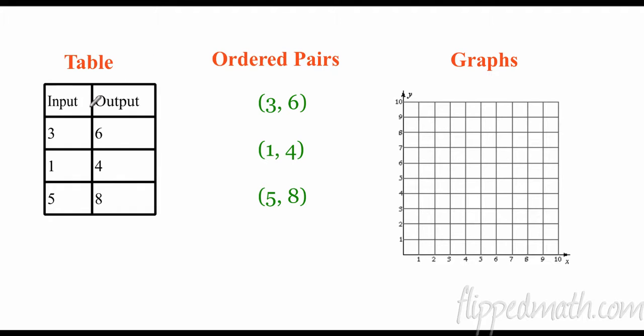So this table, this input, remember inputs are X, outputs are Y. This input is the same as an ordered pair. So three, six is the same as the ordered pair, three, six. And we know this is an X and this is a Y. And we can graph that point. We go over three. Remember, X are my horizontal values. Y is my vertical values. So I go over three on the horizontal, then I go up six. And there we have the ordered pair, three, six.